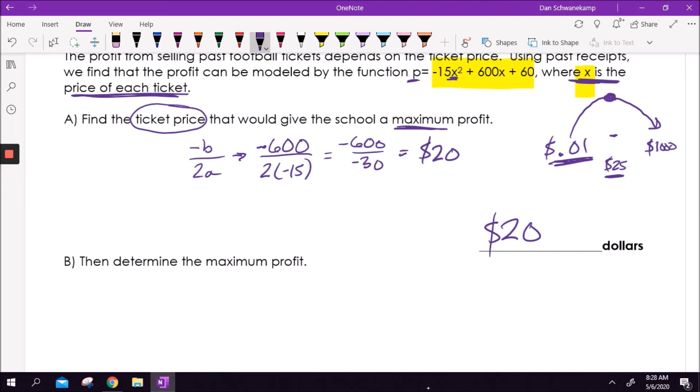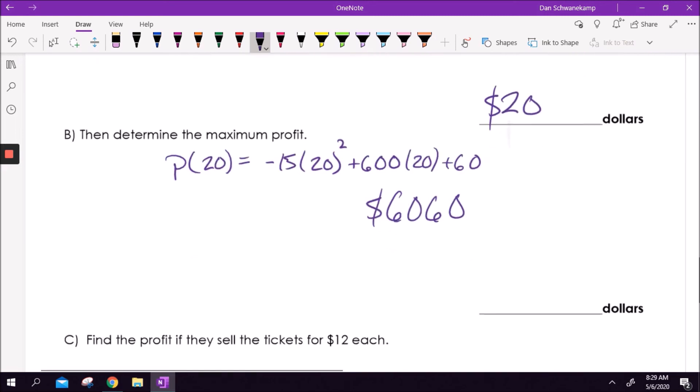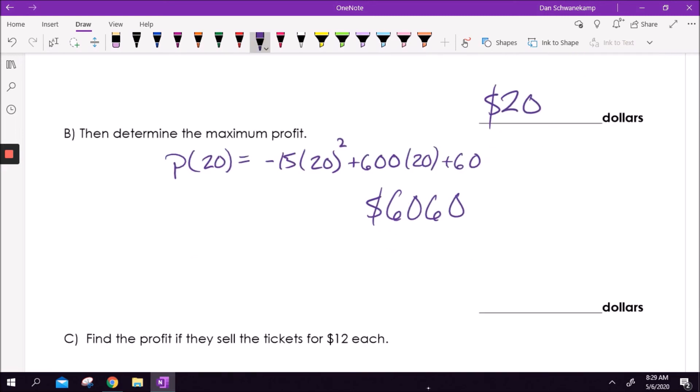Then determine the maximum profit. I want to know how much money total are we making - this is the profit P. For me to find my value, I got to plug 20 into this equation. So negative 15 times 20² plus 600 times 20 plus 60. I type it into my calculator. I get $6,060. That is the maximum profit. That is the y-value, the profit number.